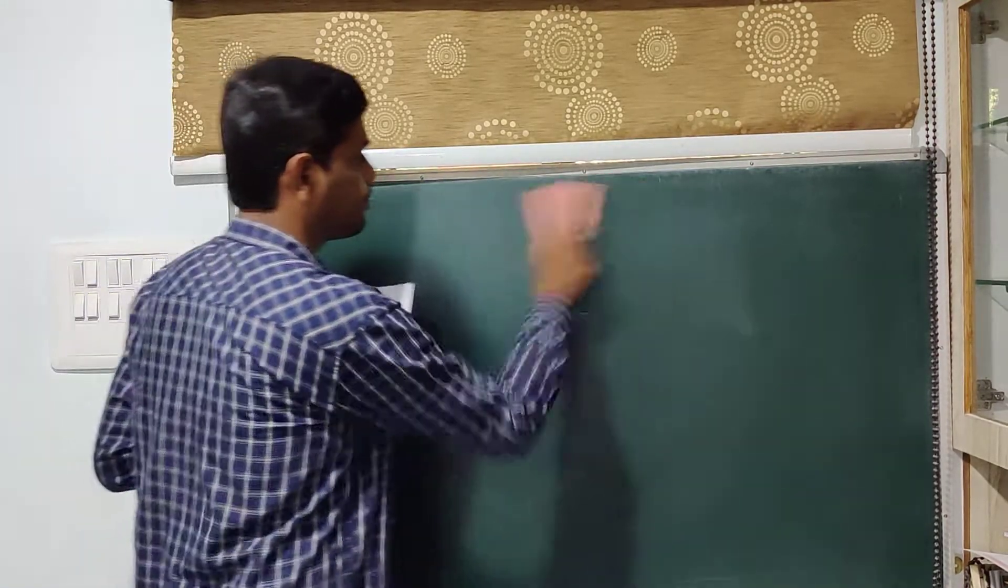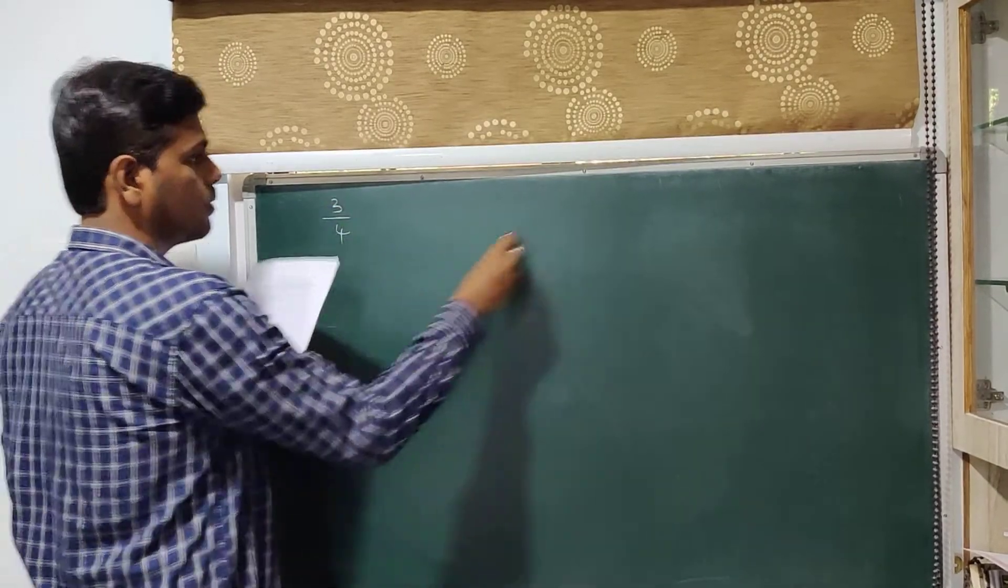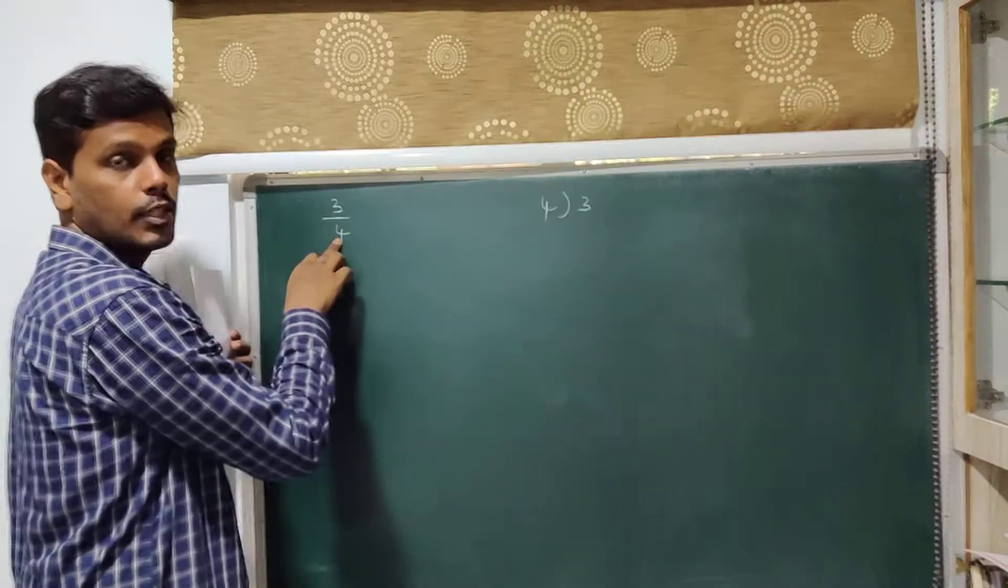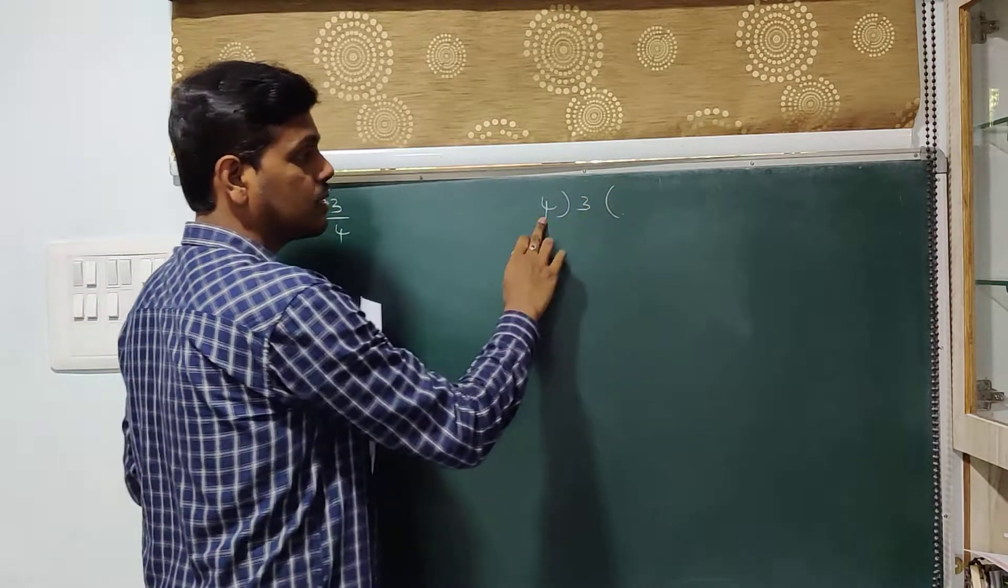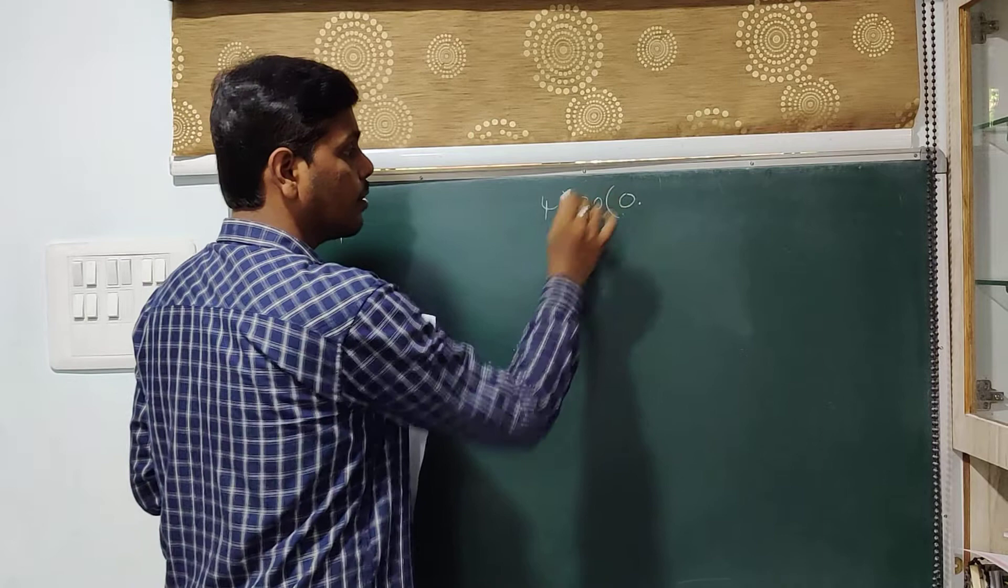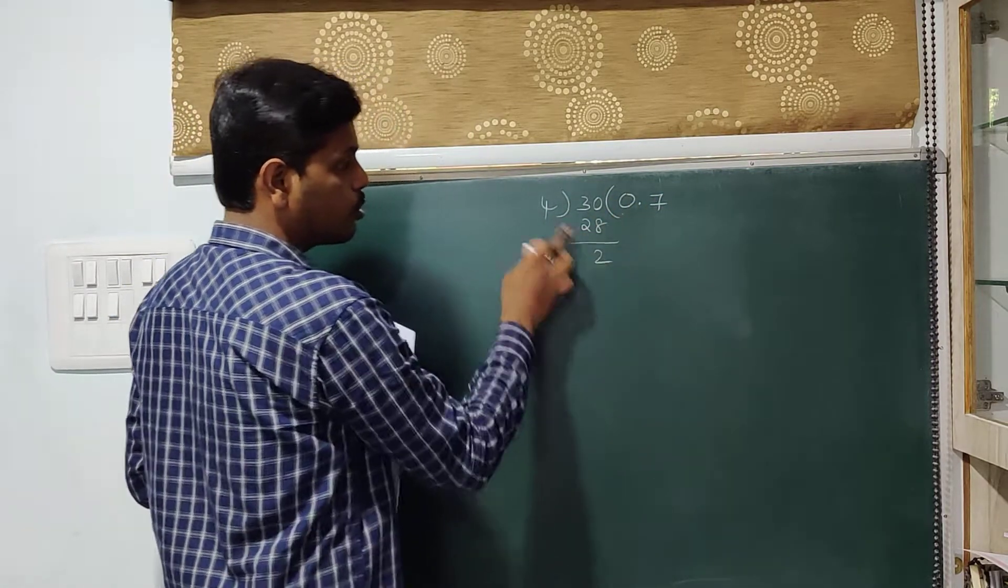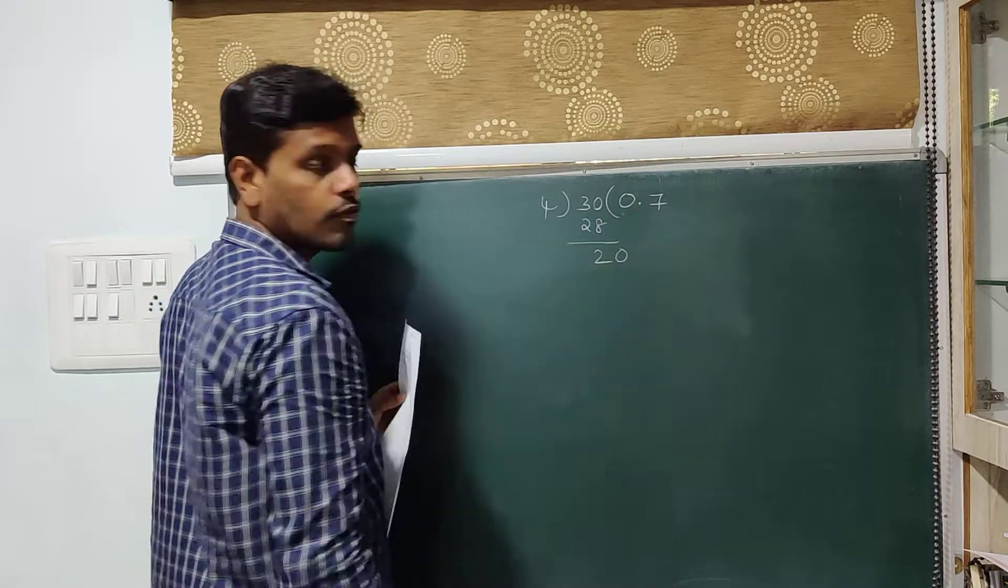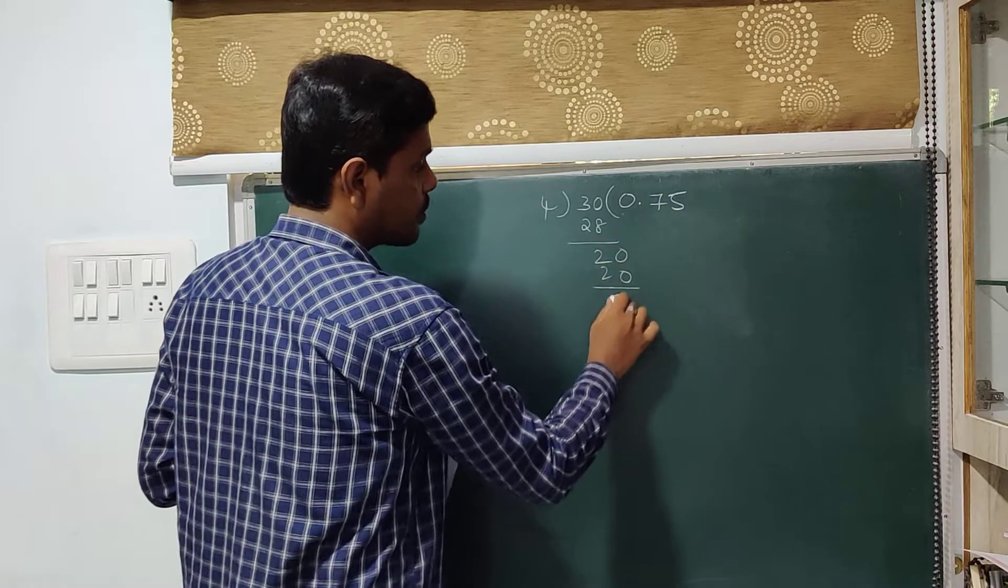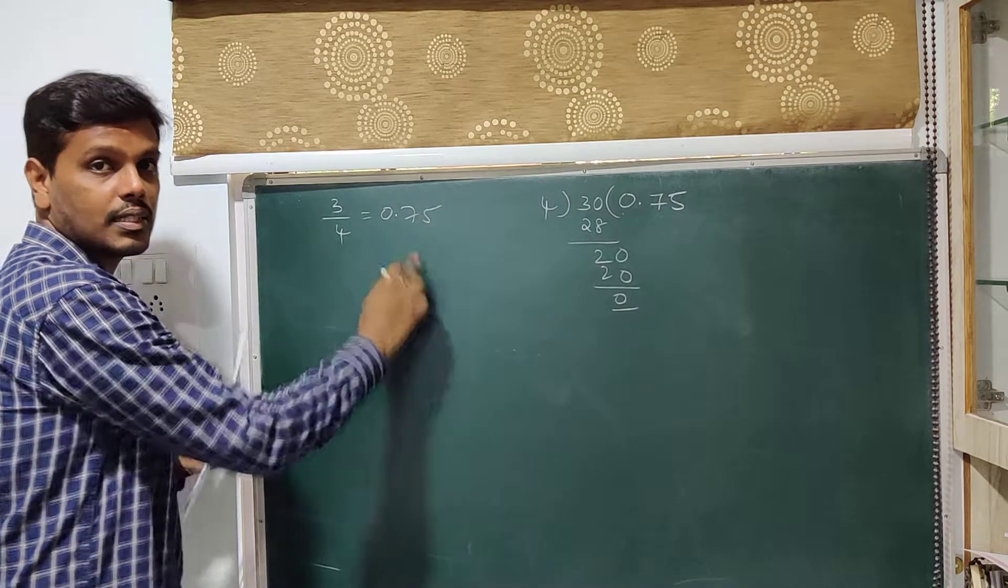Next, third one. 3 by 4. Again, 3 in the numerator is your dividend, 4 in the denominator is your divisor. 3 is less than 4, therefore take a point and when you take a point you can take 0. 4 times 7 is 28. Left over is 2. 2 is less than 4. You have a point placed there, therefore you can take 0. 4 times 5 is 20. 20 minus 20 is 0. So this value is 0.75. Again, this is a terminating decimal expansion.